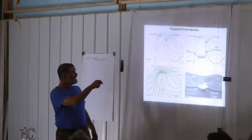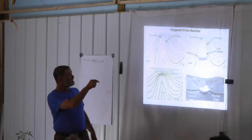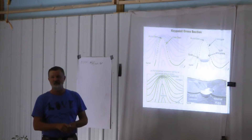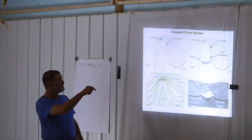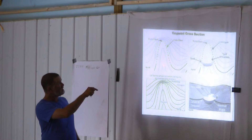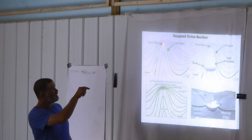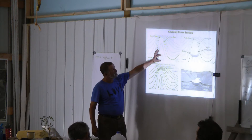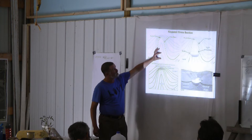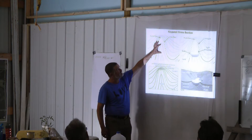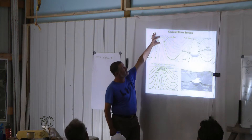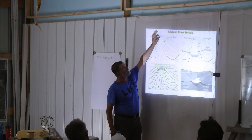To see it on a contour map — if you have contour maps of your own place, look for this: wide, wide, wide, narrow. This means it's a shallow slope, a shallow slope, a shallow slope — then it gets steeper.